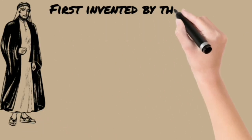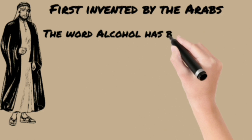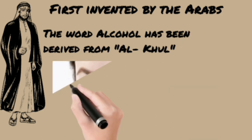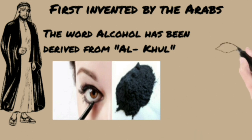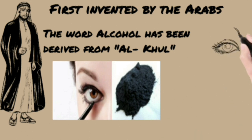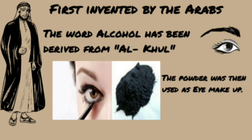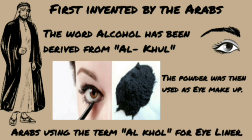The word 'alcohol' has been derived from the Arabic word 'al-kohl,' which refers to the Arabic practice of producing a black powder by condensing a vapor of metal antimony. The powder was then used as eye makeup — Arabs still use the term alcohol for eyeliner.